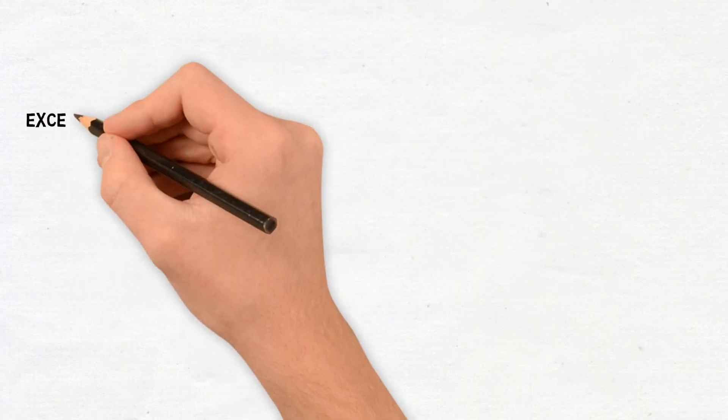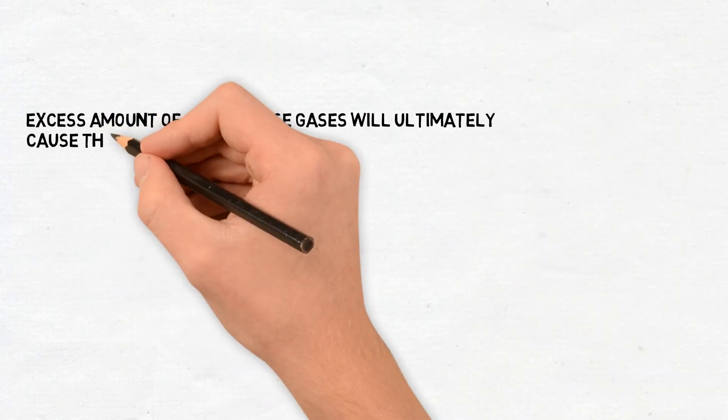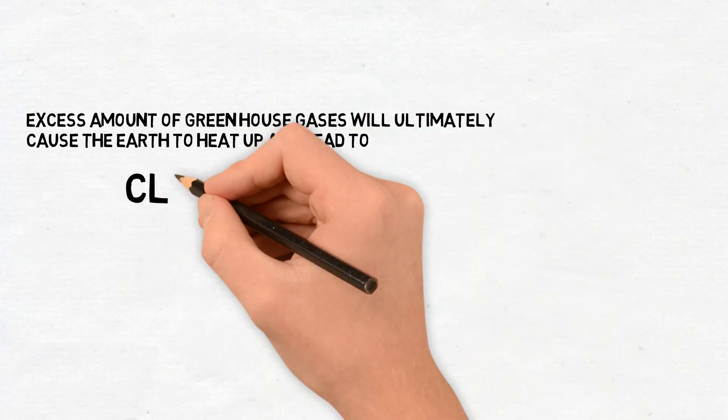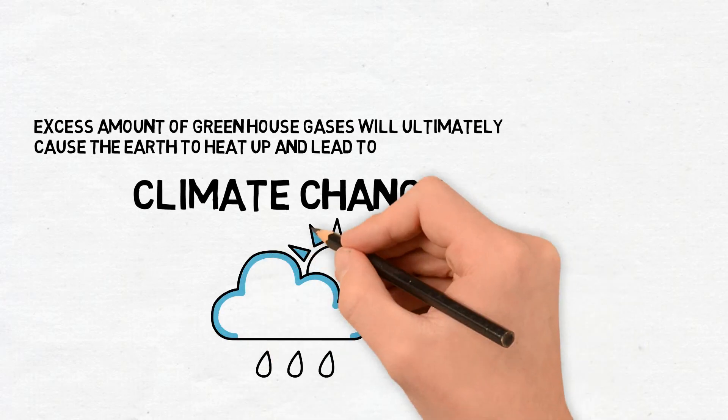But what we do need to worry about, is the excess amount of greenhouse gases we are dumping into the atmosphere, which are gonna cause a drastic change in the weather patterns around the world, and will ultimately lead to climate change, which will be disastrous for life on Earth.